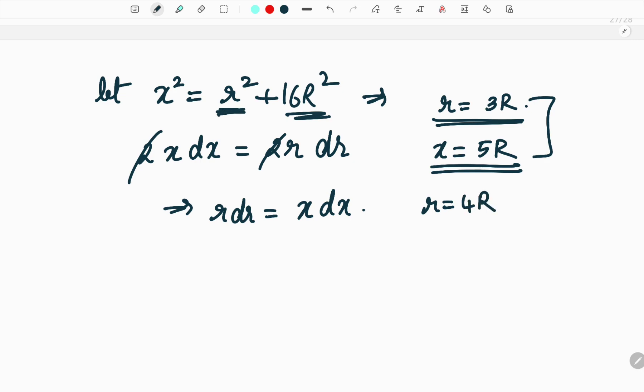And the second upper limit will be if r is equal to 4r. So in case of small r if I substitute 4r I am going to get 16r square plus 16r square that is 2 times 16r square. Therefore x will be equal to root 2 into 4r. So I will write 4 root 2 into r. So this will be the upper limit.